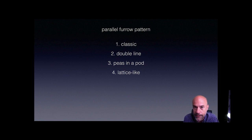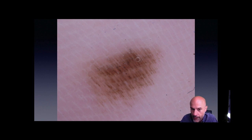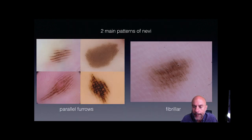This is the parallel furrow pattern with its variations. There is one additional dermatoscopic pattern on acral sites, also associated with nevi — it's usually benign. Here there are parallel brown lines, but they don't follow the direction of the furrows and ridges; they are perpendicular to the furrows and ridges. This is the so-called fibrillar pattern. The reason we see the fibrillar pattern is essentially mechanical pressure — we see it on moles located in areas of the sole where there is a lot of physical pressure. These are the two main patterns of nevi: parallel furrow with variations, and fibrillar.